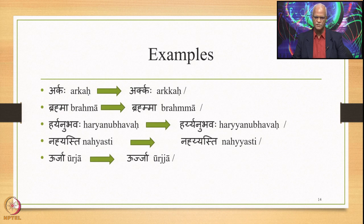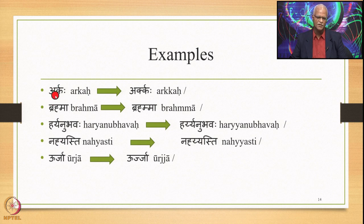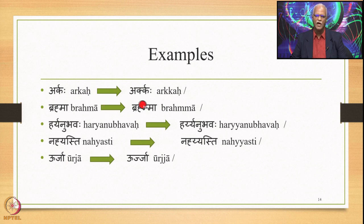Here are the examples. Arkaha: we have A (Ach) followed by R followed by K (Yar). So Ach + R + K, and this K gets reduplicated. K is substituted by two occurrences of K by application of 8.446, giving the output Arkaha — there are two Kakharas. Similarly Brahma: A after Bra is Ach, followed by H.